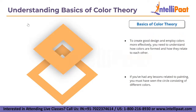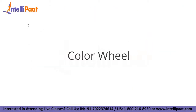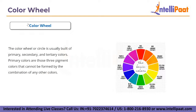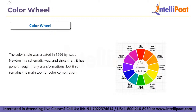Now let's look at what the color wheel is. If you've had any lessons related to painting, you must have seen the circle consisting of different colors — it is basically called the color wheel, which helps us understand how colors relate to each other and how they are combined. The color circle is built by primary, secondary, and tertiary colors.